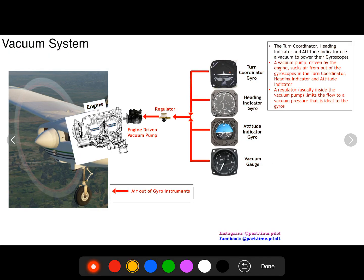So how does this work? Well, an engine driven vacuum pump creates a pressure difference between the instruments and the pump itself, which creates a flow. If you follow these red lines, a flow of air out of the instruments through what we call a regulator and out into the pump.